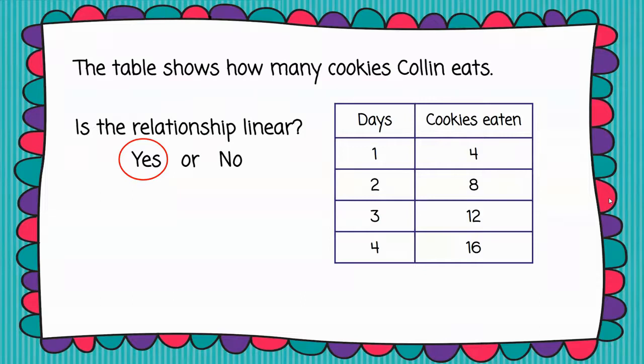Now, I'm going to caution you. If he had eaten four cookies one day and then five cookies the next day and then went back to eating four every day, that would not be linear. It has to be the same pattern every single time. So be real careful there.